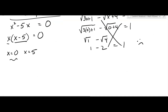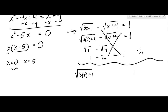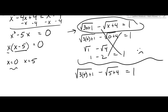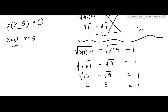Now let's try x equals 5 in the original equation: the square root of 3 times 5 plus 1, minus the square root of 5 plus 4 — does that equal 1? The square root of 15 plus 1 is the square root of 16, which is 4. The square root of 9 is 3. And 4 minus 3 equals 1. Yes, x equals 5 works.